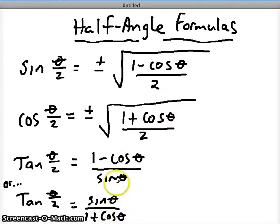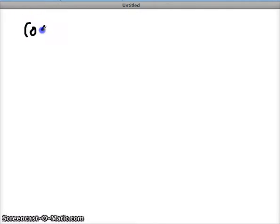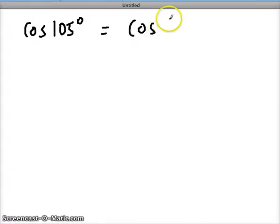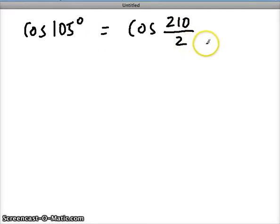Let's practice applying these formulas. Here's why we use them: if we have to evaluate an angle that's not one of our nice increments we know, we can double it to use the half-angle formula. So if we double the angle and get 210 divided by 2, this is where we get our half-angle form — because 210 divided by 2 is 105. Even though we're doubling the angle, we want it to be equivalent to this, so we set it up as our half-angle formula.